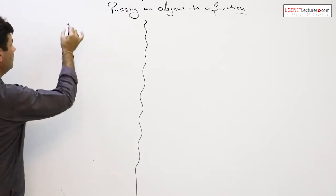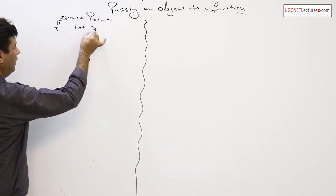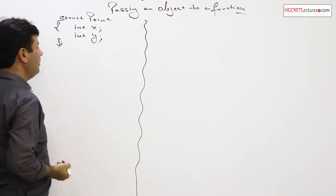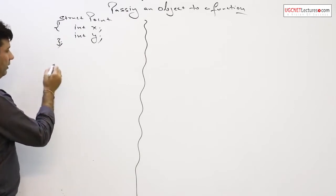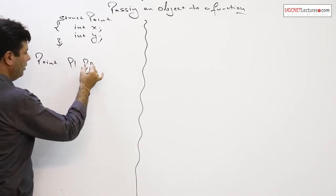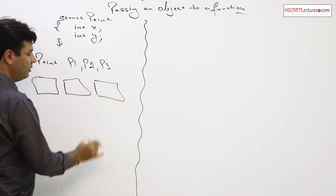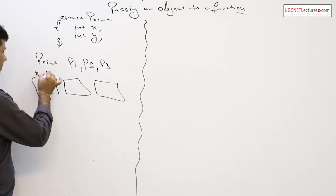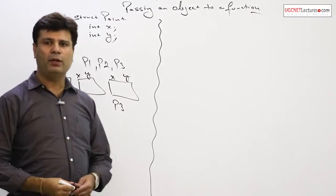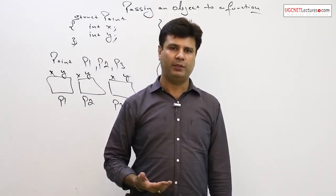If I define a structure called point having two elements — int x and int y — and declare three variables of structure point: p1, p2, p3, there will be three different memory allocations. One x and y for p1, another for p2, and another for p3. The number of objects declared determines the number of memories allocated for their elements — the same applies to data members in classes.